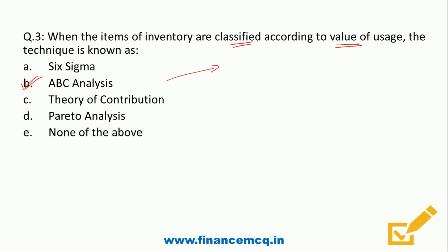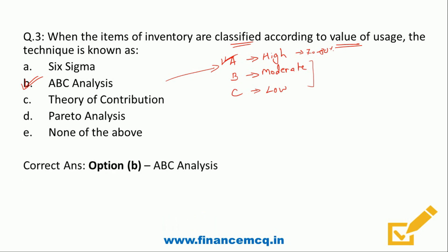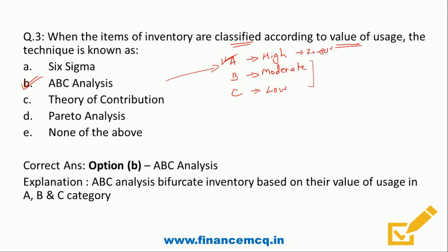In ABC Analysis, we bifurcate inventory into three categories: A, B, and C. Category A has all high-value inventory, B has moderate-value inventory, and C has low-value inventory. We put more focus and control on high-value inventory because it constitutes around 70–80% of total inventory value. We bifurcate as per ABC Analysis based on the value of inventory. The correct answer is Option B, ABC Analysis.